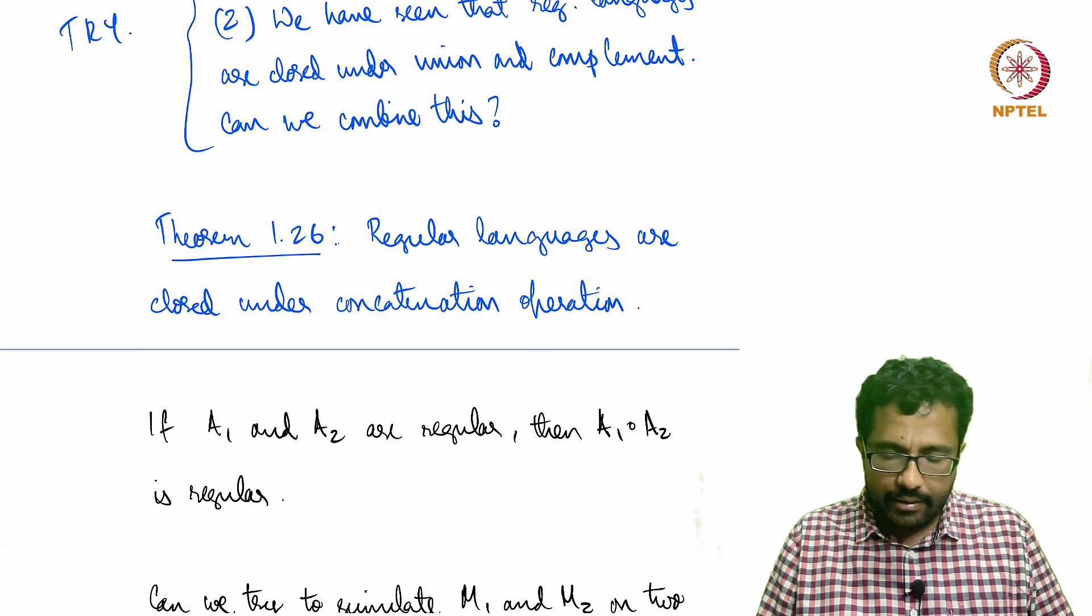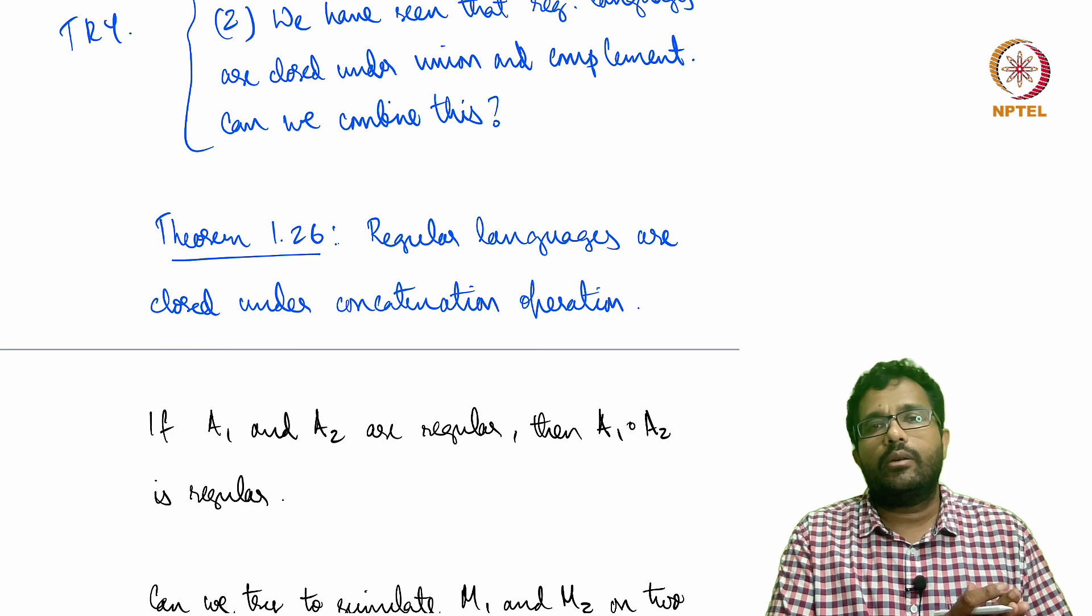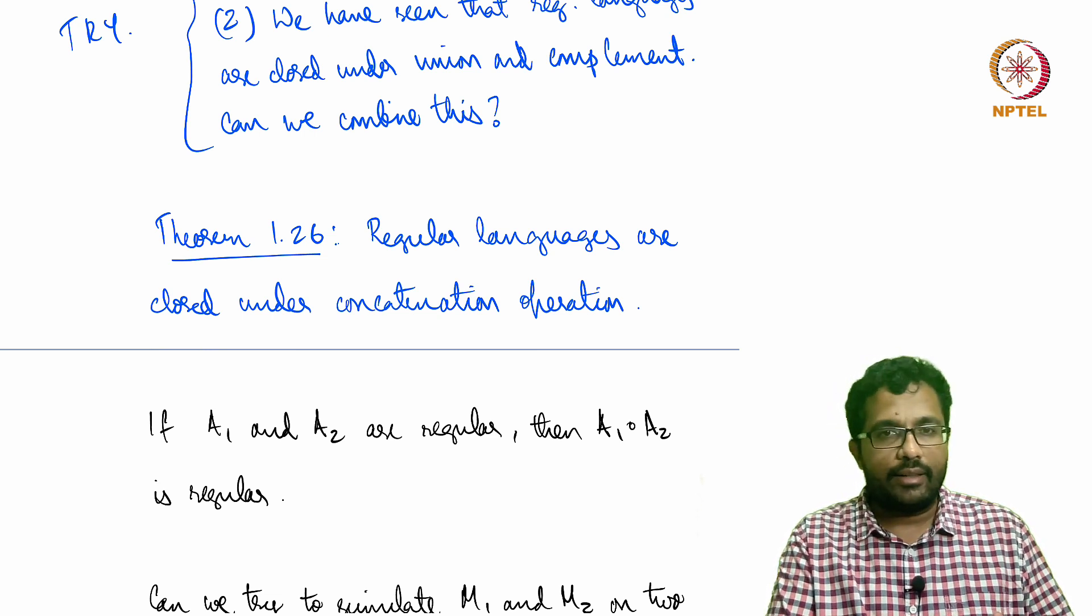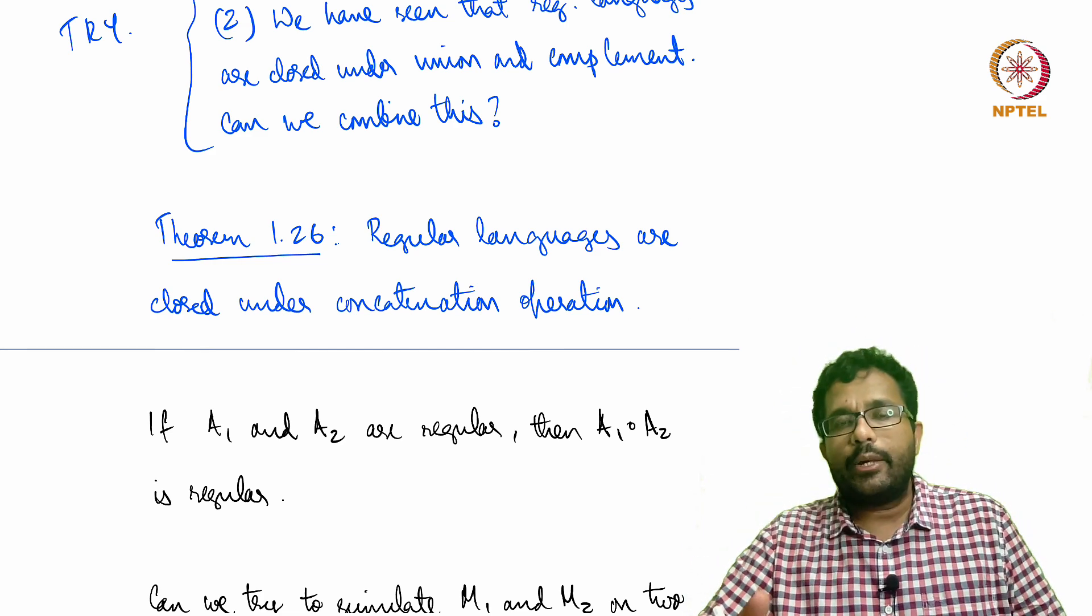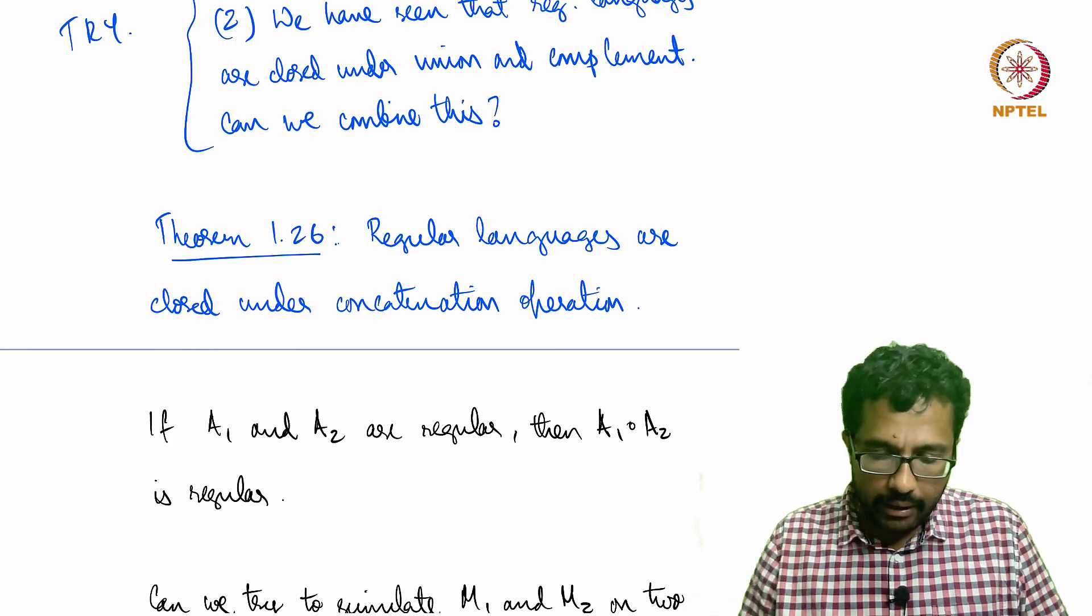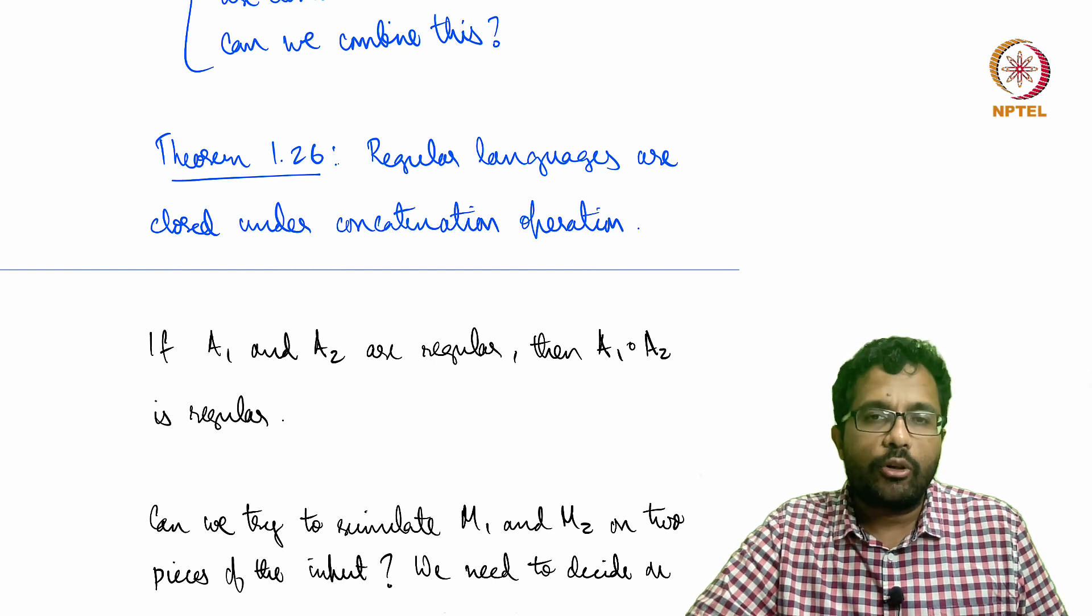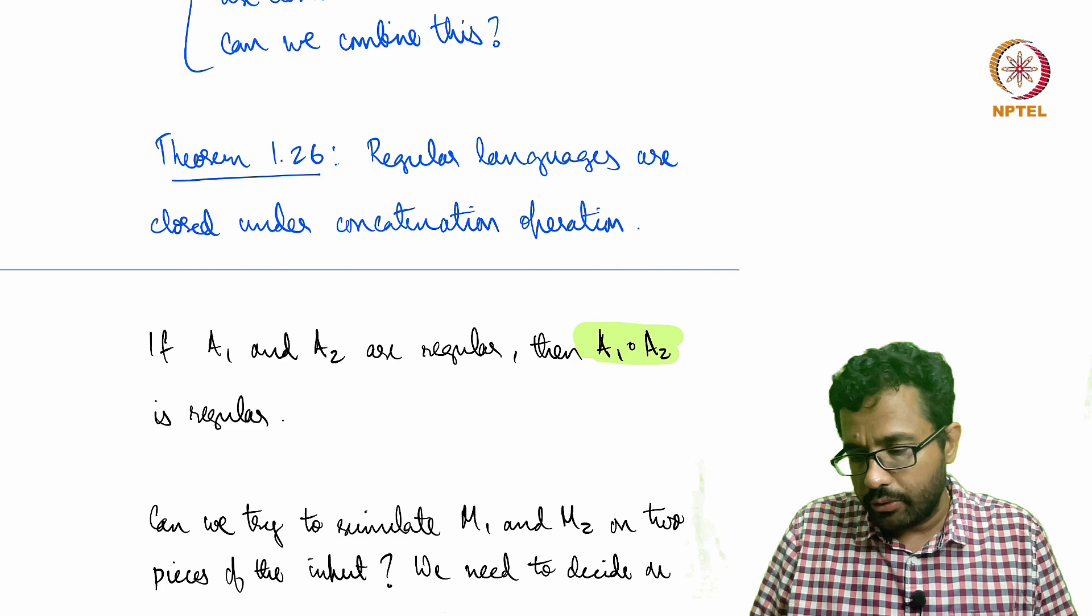Next, we saw there are three regular operations: union, concatenation, and star. The next thing to try is to show that regular languages are closed under concatenation operation. Meaning, if A1 and A2 are regular, then the concatenation A1 concatenation A2 is also regular.